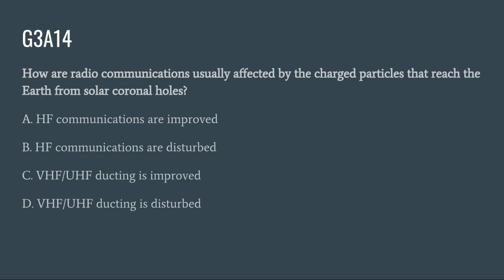G3A14: How are radio communications usually affected by charged particles that reach the Earth from solar coronal holes? A. HF communications are improved. B. HF communications are disturbed. C. VHF and UHF ducting is improved. Or D. VHF and UHF ducting is disturbed. The correct answer is B: HF communications are disturbed.